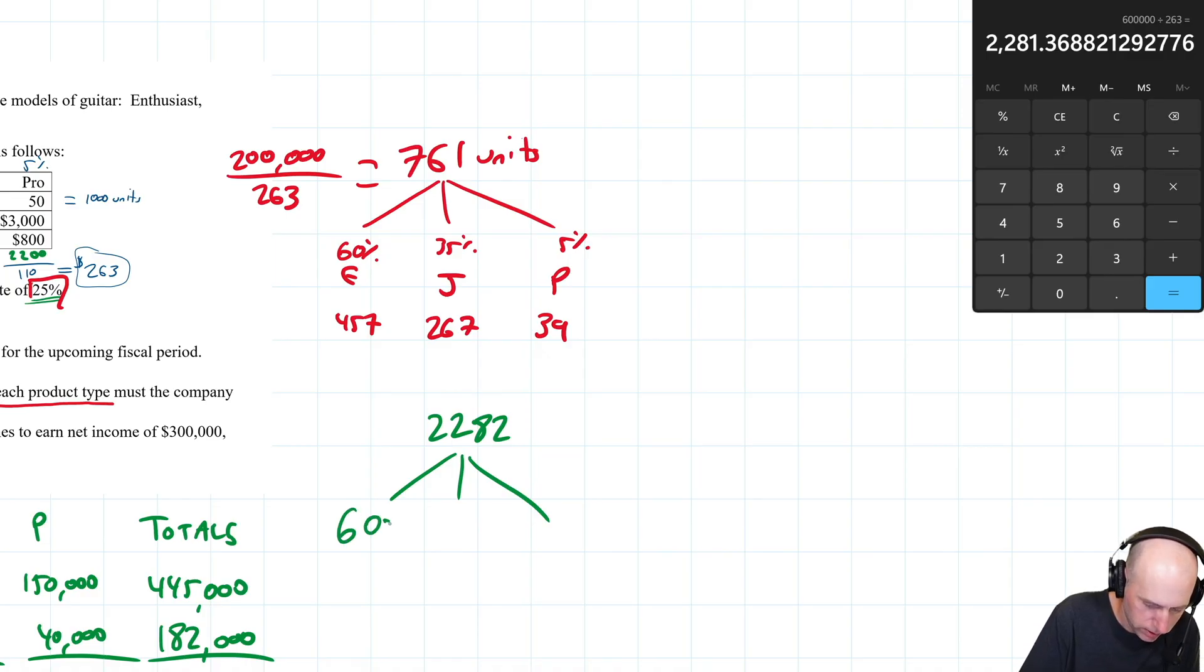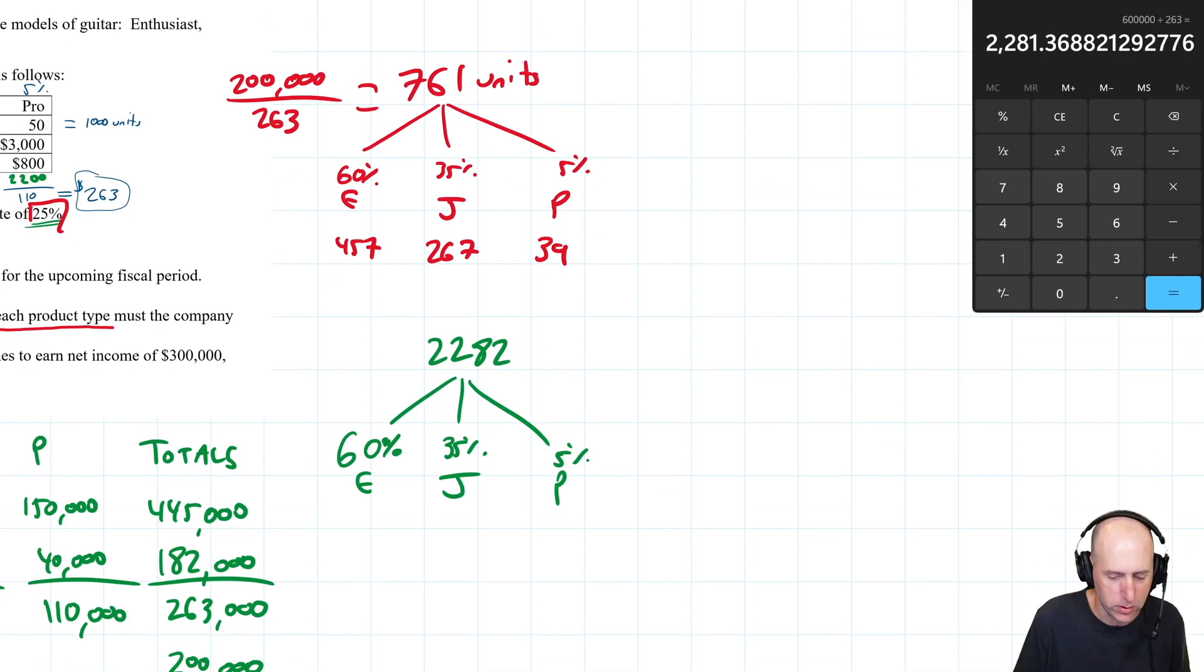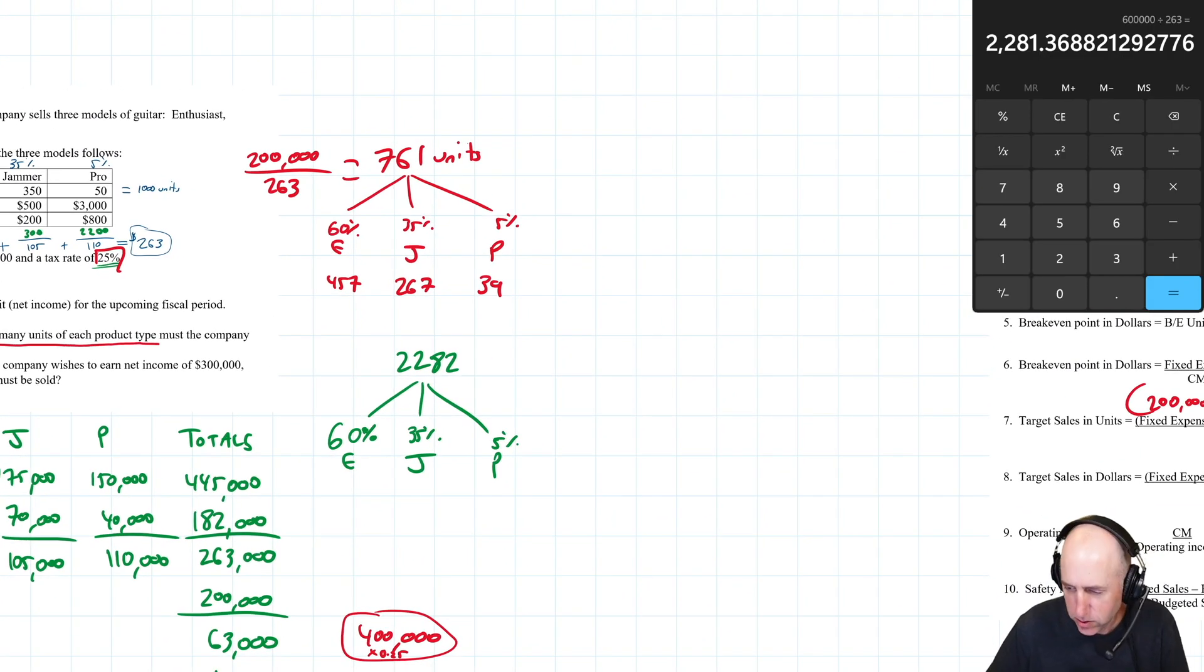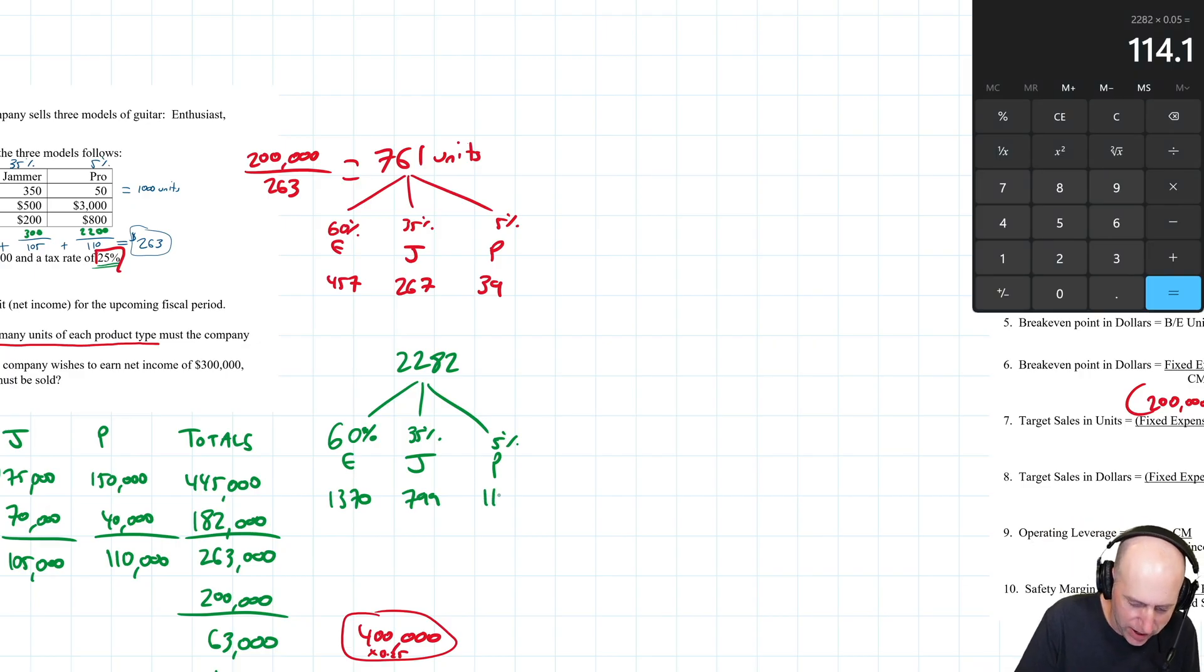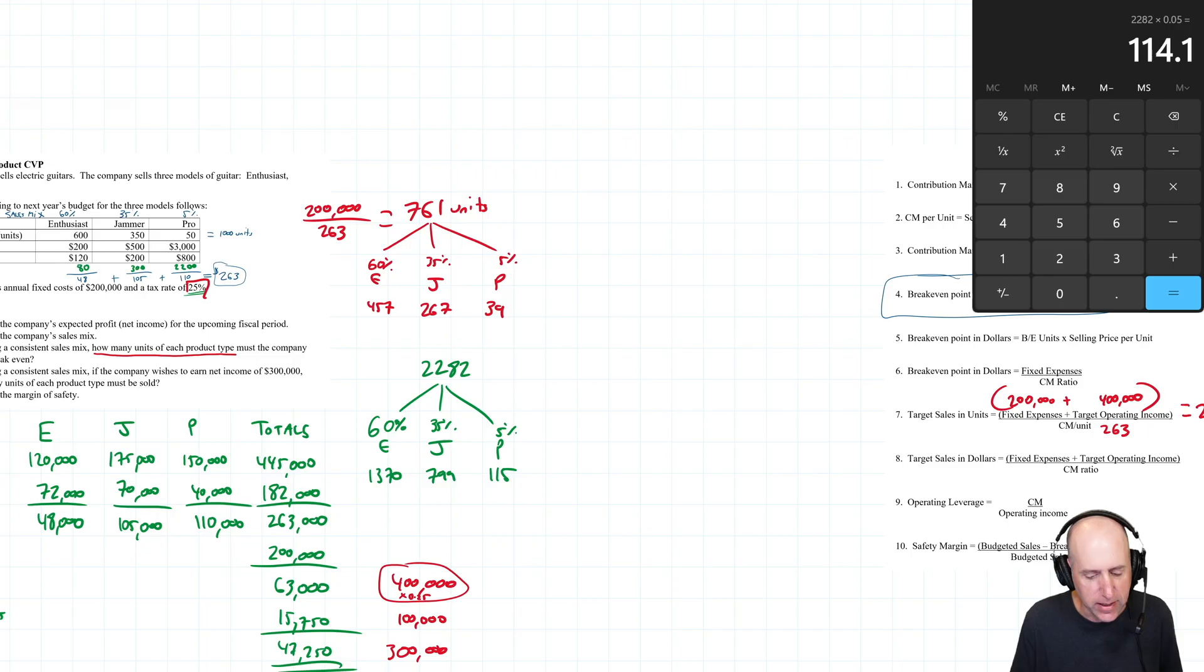60% of them are Enthusiast, 35% are Jammer, and 5% go to the Pros. 2282 times 0.6 is 1370 for Enthusiast. 2282 times 0.35 is 799 for the Jammer. 2282 times 0.05 is 115 for the Pro. That's how many units of each type I need to sell to make my target profit of 400,000 dollars.